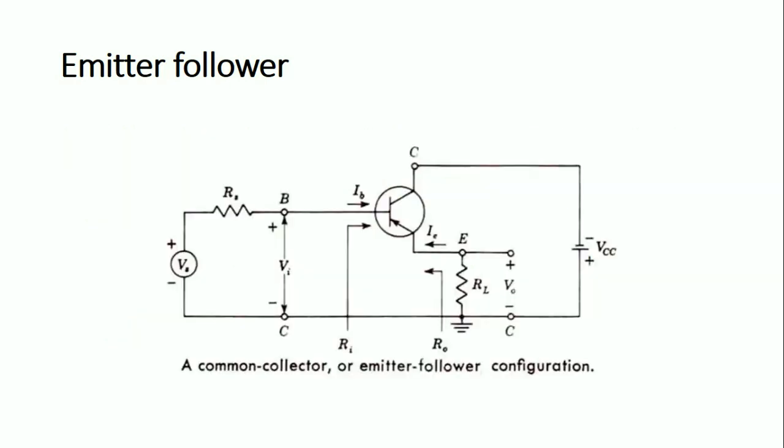Here is the circuit of the emitter follower. Instead of taking the output at the collector, here we are taking the output across the emitter terminal. So when there is a change at the base, there will be a change at the emitter. This emitter follows the input signal which is given at base terminal of the transistor.